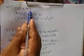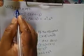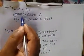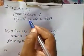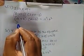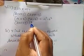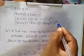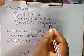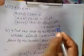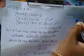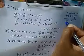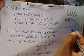Next, eighth sum: 203 × 197. We write 203 as 200 + 3 and 197 as 200 − 3. This is in the form of (a + b)(a − b) = a² − b², where a is 200 and b is 3. So: 200² − 3² = 40,000 − 9 = 39,991.